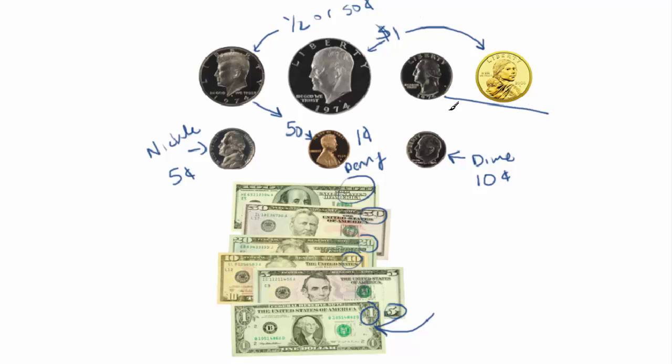And then we call this one a quarter. It's a quarter because if we get four of them together, they'll make a dollar. So one fourth of a dollar is a quarter. So that is worth 25 pennies, 25 cents. This is 100 cents, right? Or $1.